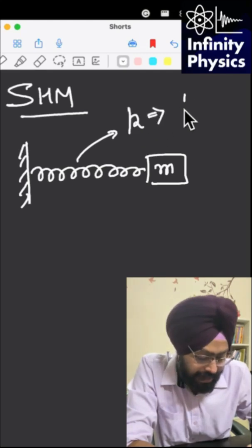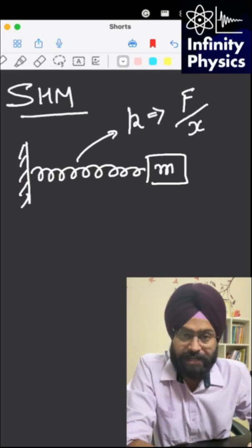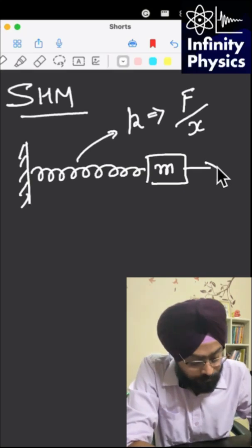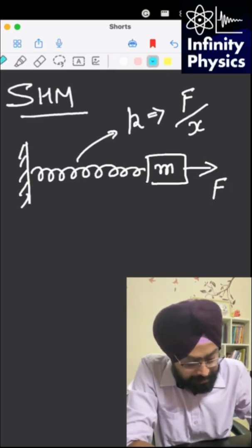Now this spring has a spring constant k. Now what is k? k is the force per unit length developed in the spring. This is called spring constant. Now when you apply some force in this direction, this is applied force, then there will be an opposite force which is called restoring force.